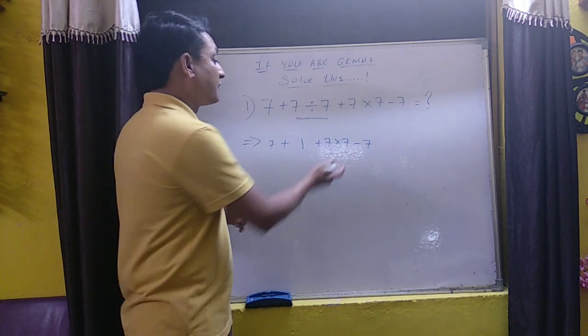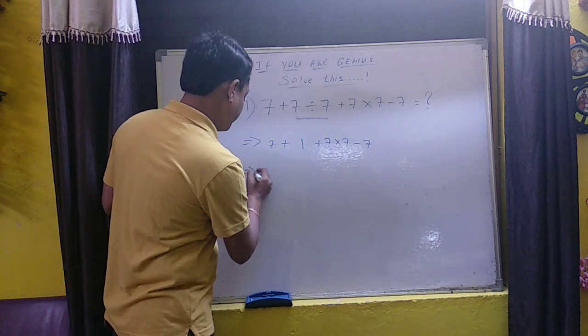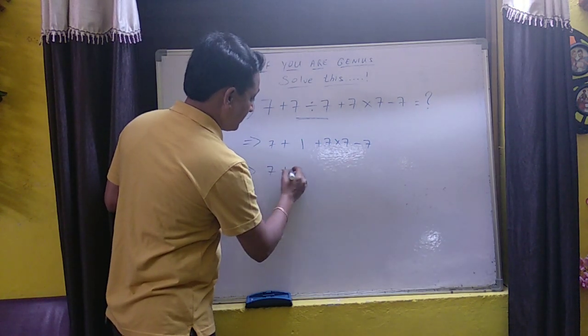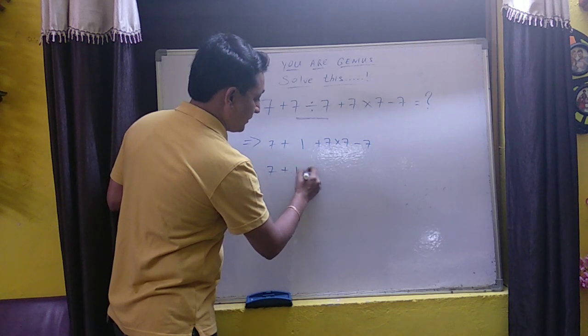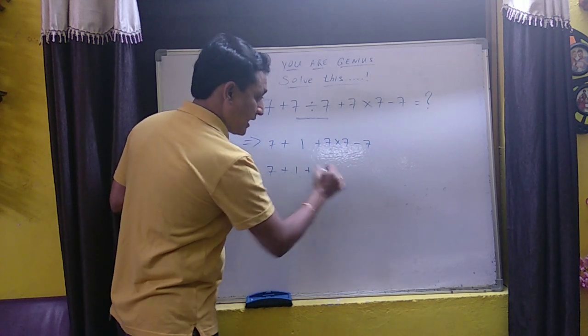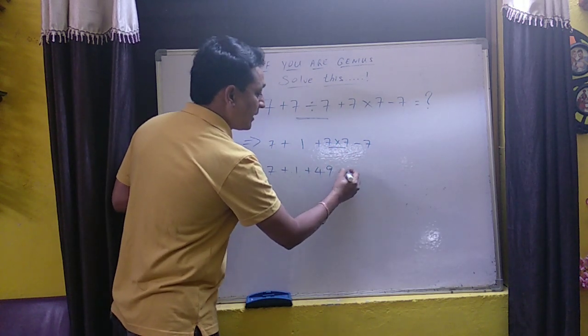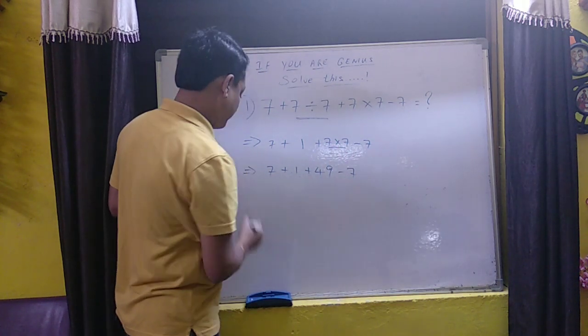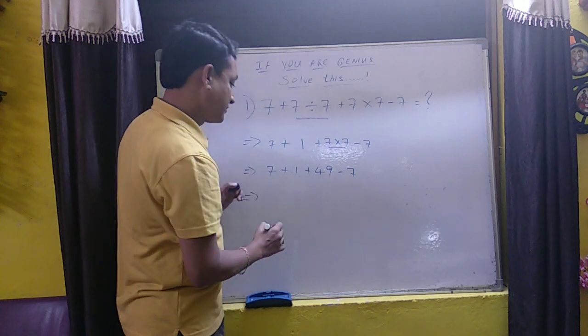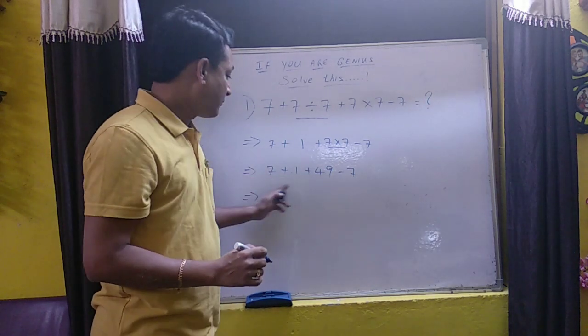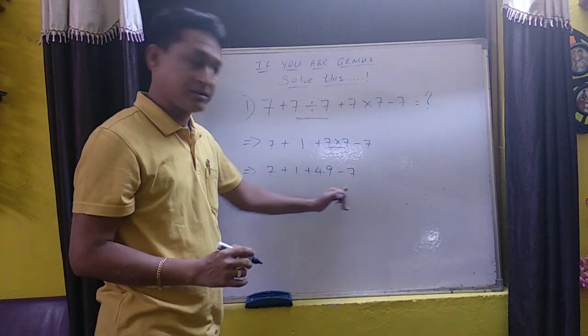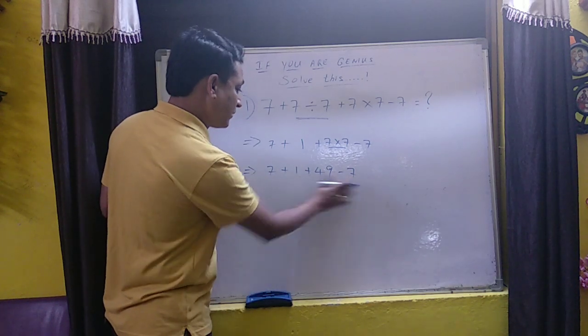Now let's solve for the multiplication. 7 plus 1 plus 49 minus 7 as it is. Now the next one we have to go with. Check what you have. We have addition and subtraction.